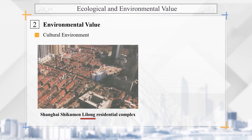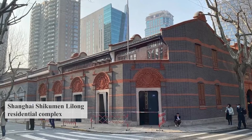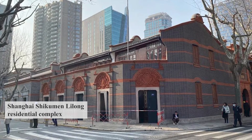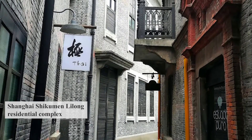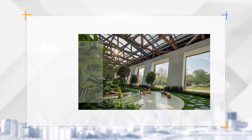Cultural environment refers to the degree of response of historic buildings to the regional cultural characteristics of the environment, including the preservation of the architectural context and whether the logical relationship between the architecture and environment is clear. Shanghai Shikumen residence groups are the embodiment of the cultural environmental value of old Shanghai Nongtang.